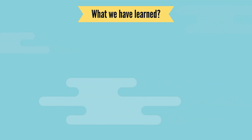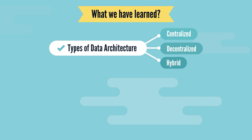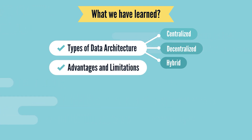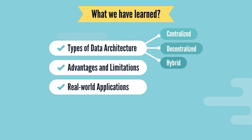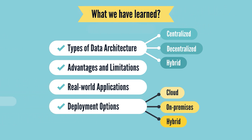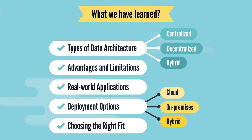Let's recap the key points we've covered in this lesson. We explored three main types of data architecture: centralized, decentralized, and hybrid. Each architecture type has its own advantages and limitations. We discussed real-world applications and use cases for each type. We covered deployment options including cloud, on-premises, and hybrid environments. And finally, we learned how to choose the right architecture based on specific requirements.